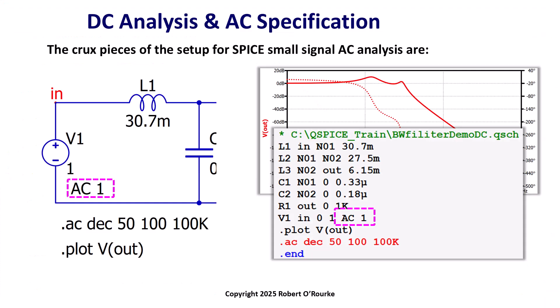The summary here is that QSPICE small signal AC analysis has two required pieces. First, the AC specification in the source. And second, the AC analysis simulation command.